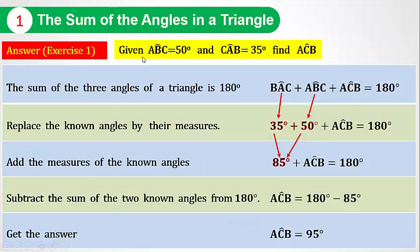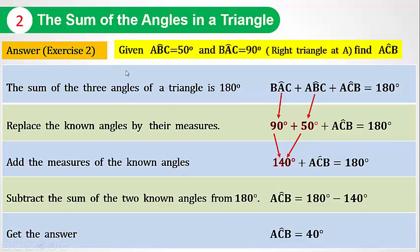Answers. Exercise 1: Given ABC equals 50 degrees and CAB equals 35 degrees. Find the measure of angle ACB. BAC plus ABC plus ACB equals 180 degrees. The measure of BAC is 35 degrees and the measure of ABC is 50 degrees. So 35 degrees plus 50 degrees plus ACB equals 180 degrees. 35 plus 50 equals 85, then 85 degrees plus ACB equals 180 degrees. ACB equals 180 degrees minus 85 degrees. ACB equals 95 degrees.